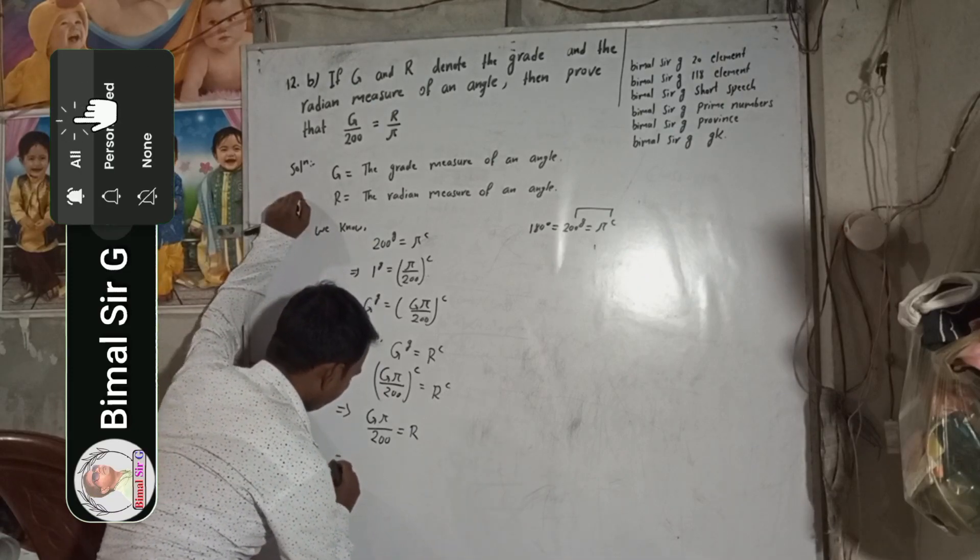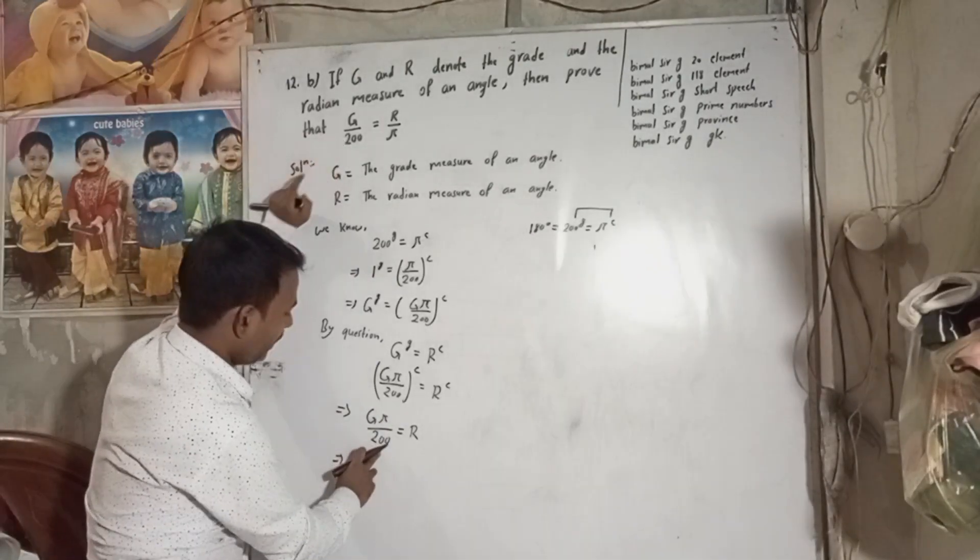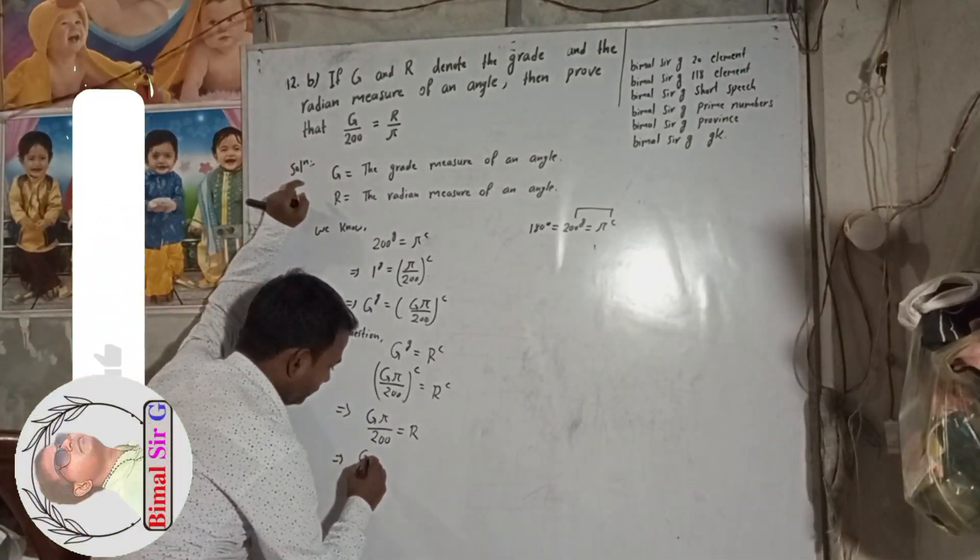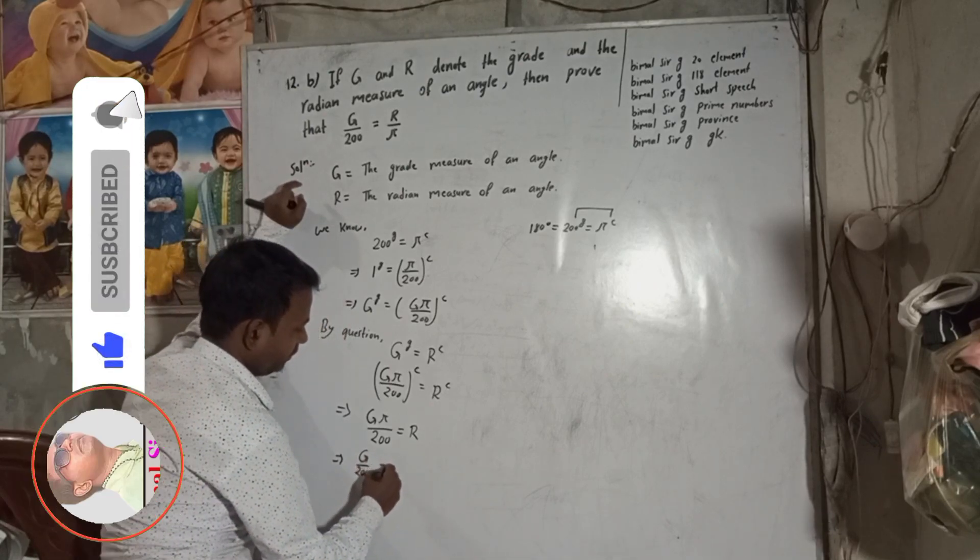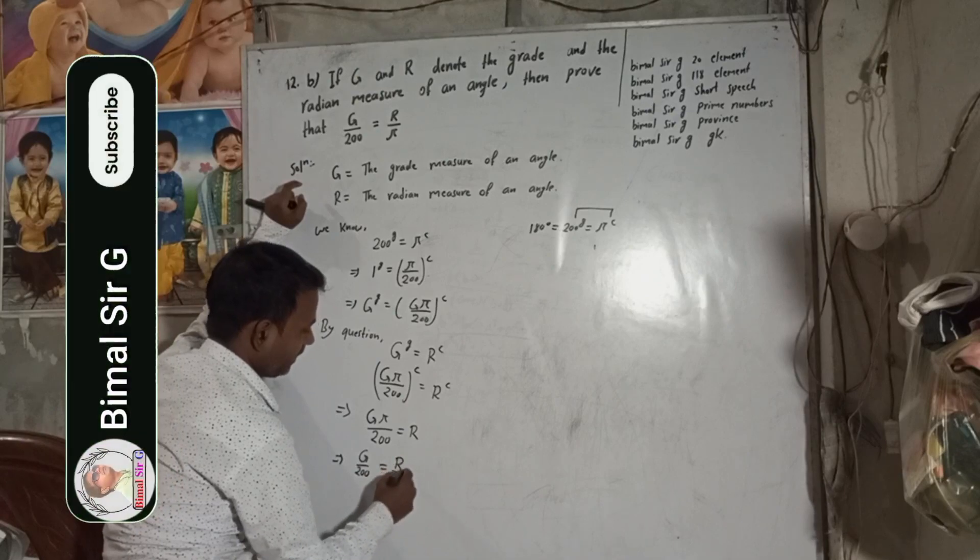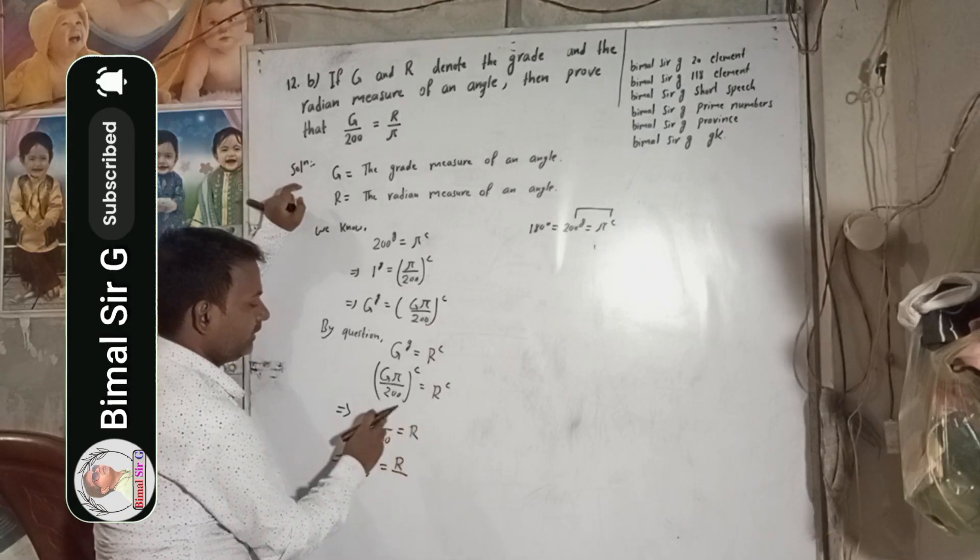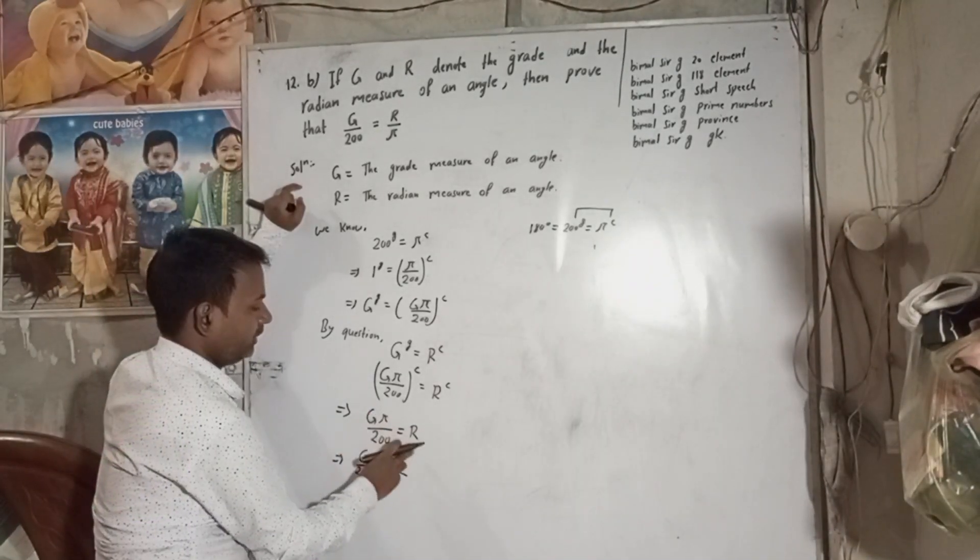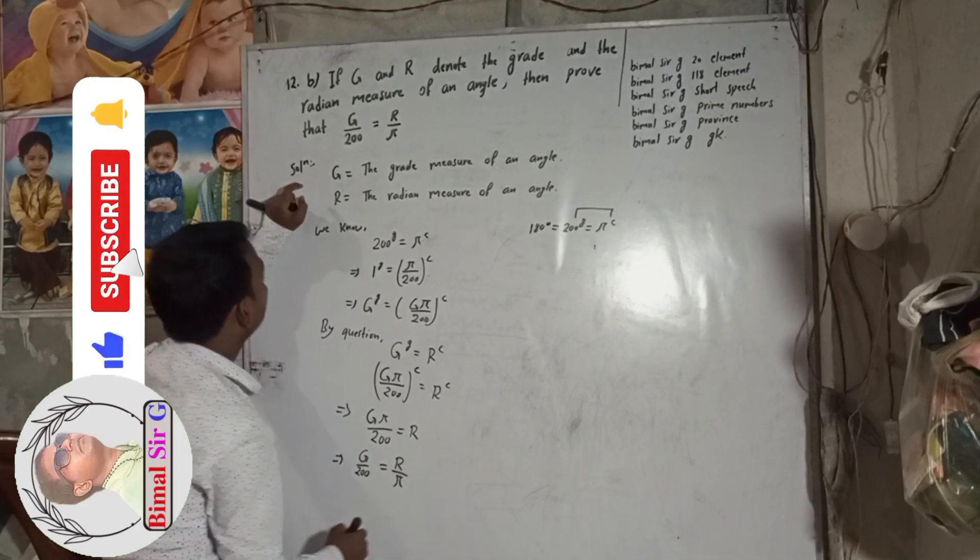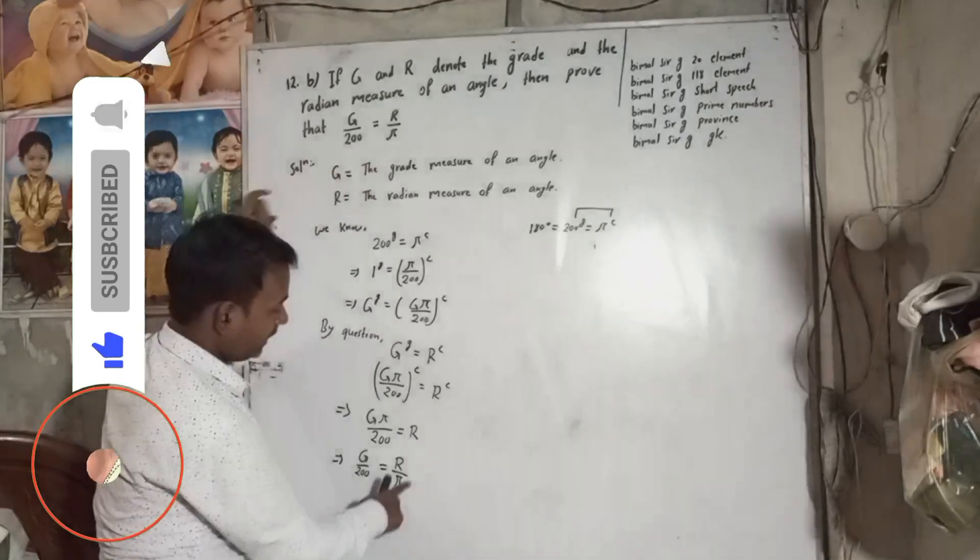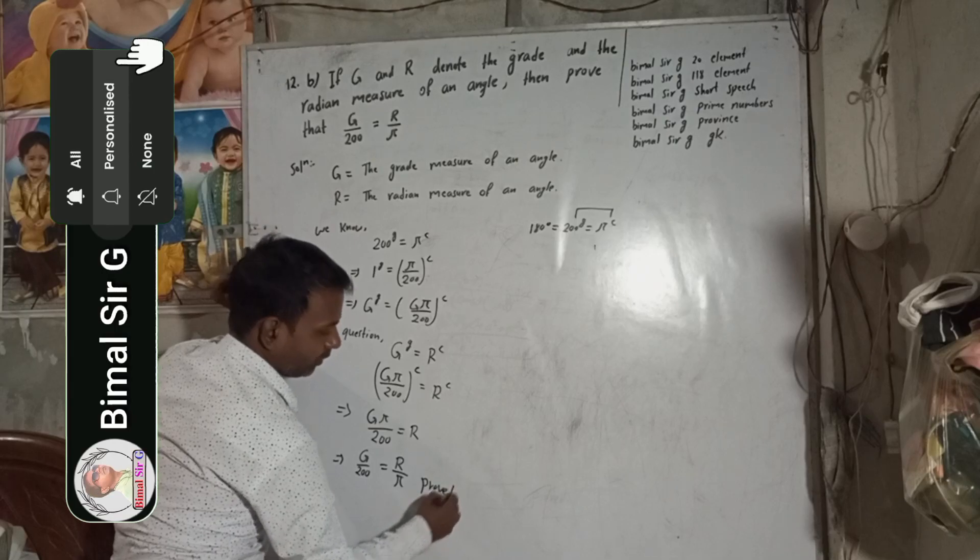Now, we have to prove there. See there, G by 200. So G by 200 is there, we have to keep this as it is. So G by 200 is equal to this R on the same side, and this pi when it goes to right side, this is now in multiply form, it will be divided, it will be written in the denominator. So this will be pi here. So G by 200 is equal to R by pi. This is our required solution. Proof.